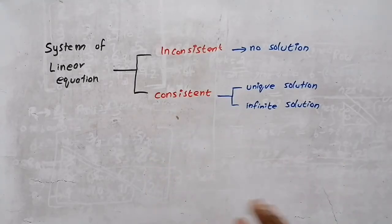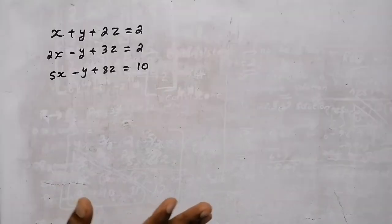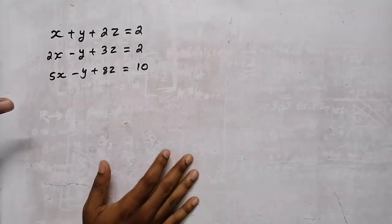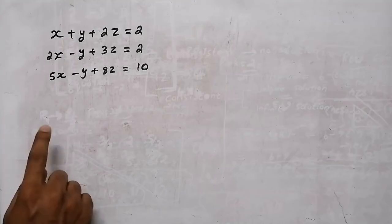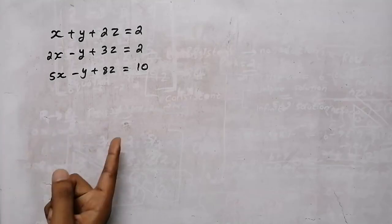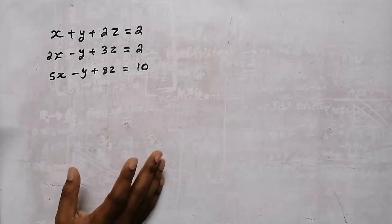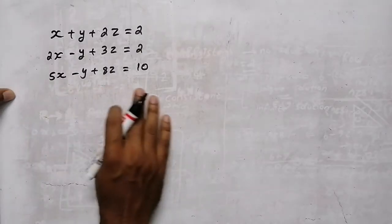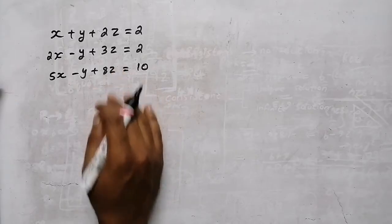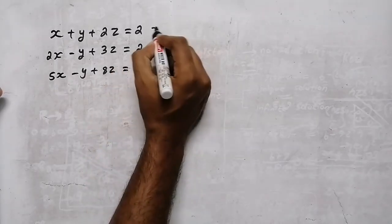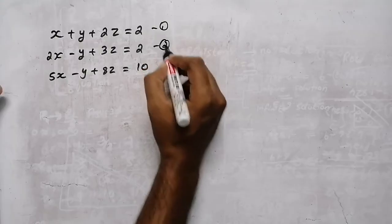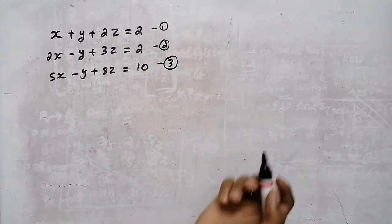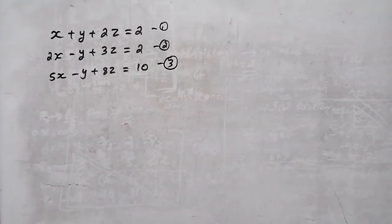I will explain a question here in detail. I will explain a system of linear equations. Here are three equations — equation number one, equation number two, and equation number three.